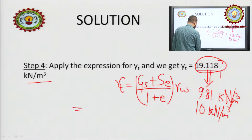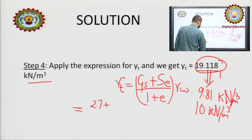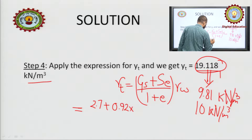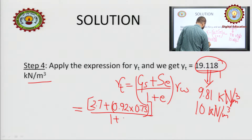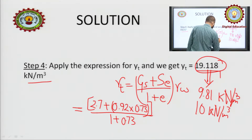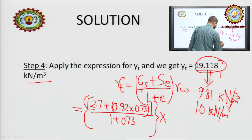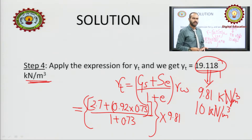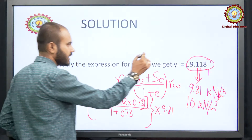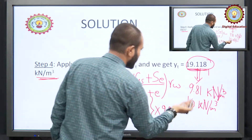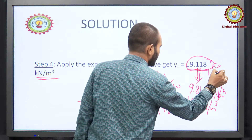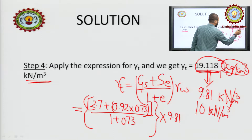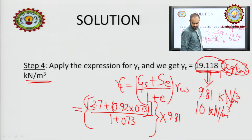Remember that you always have to write the unit with your answer, because not writing units can cost you marks in the exam. Just writing the numerical part does not tell us what it is — is it in kg, kilometers, or what? So always write the unit. This completes the first part, γT.